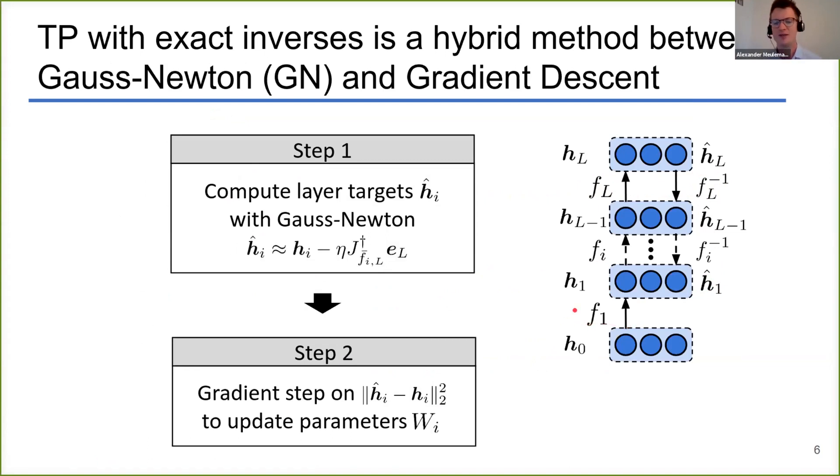Then you will see that these targets are actually your normal activation minus your output error which is projected by the pseudo-inverse of the Jacobian of your output with respect to the considered hidden layer. So this use of a pseudo-inverse of a Jacobian is really characteristic of Gauss-Newton optimization, which is an approximate second-order optimization method.